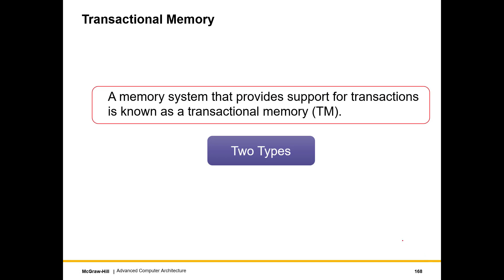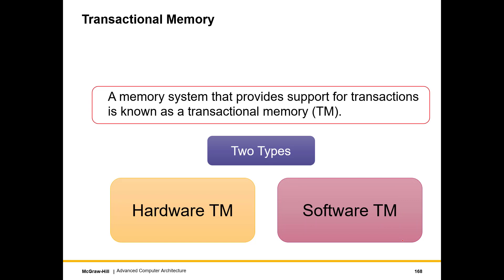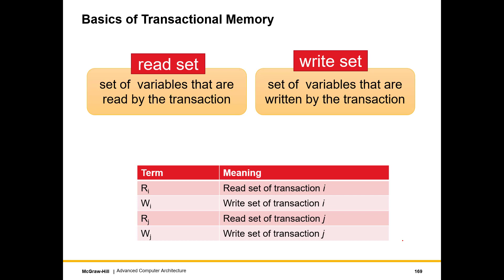A memory system that provides support for transactions is known as transactional memory. There are two types: hardware transactional memory and software transactional memory. Hardware transactional memory provides transactional support in hardware; software transactional memory provides it in software. Each transaction has a read set and a write set. The read set is the set of variables read by the transaction; the write set is the set of variables written by the transaction. We let Ri denote the read set of transaction i, Wi the write set of transaction i, and similarly Rj and Wj for transaction j.